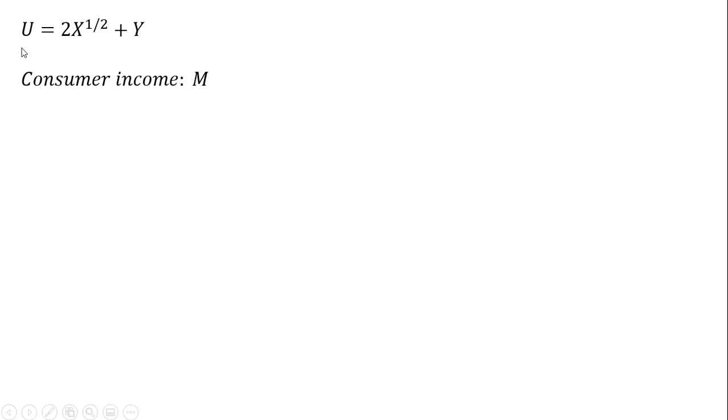Here is our quasi-linear utility function. We're going to let M equal income, the price of good X is P subscript X, price of good Y, P subscript Y. The consumer's budget constraint is given as follows: M equals PX times X plus PY times Y.